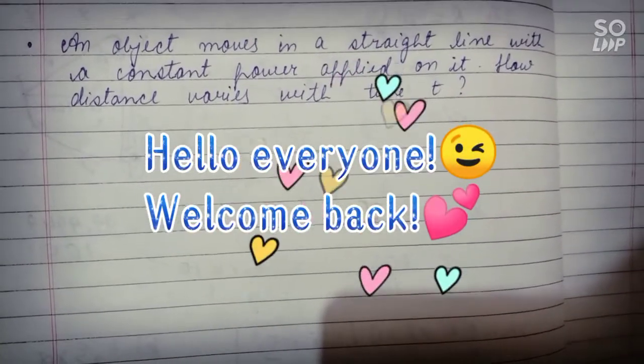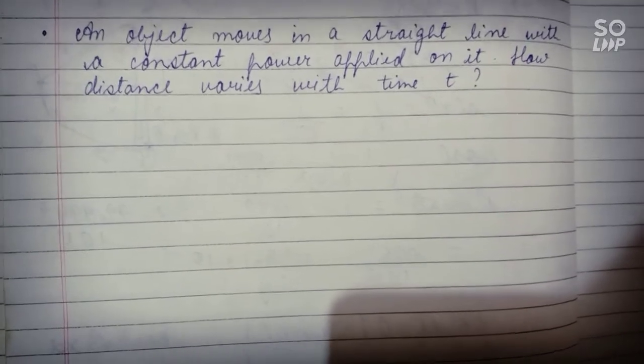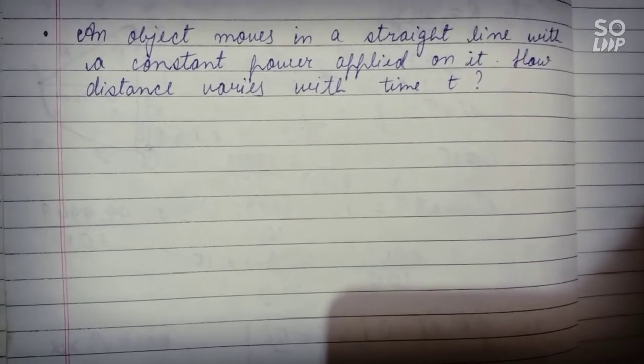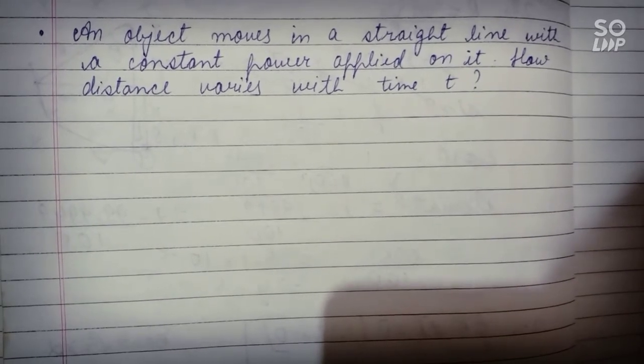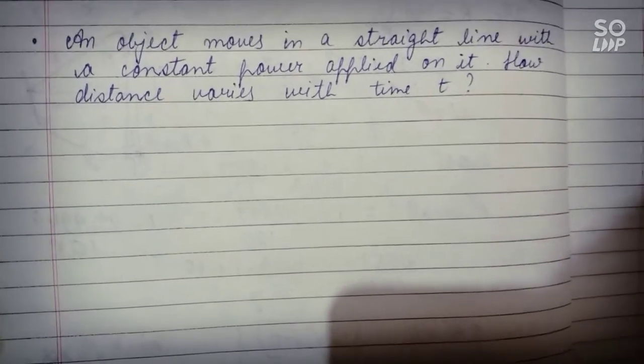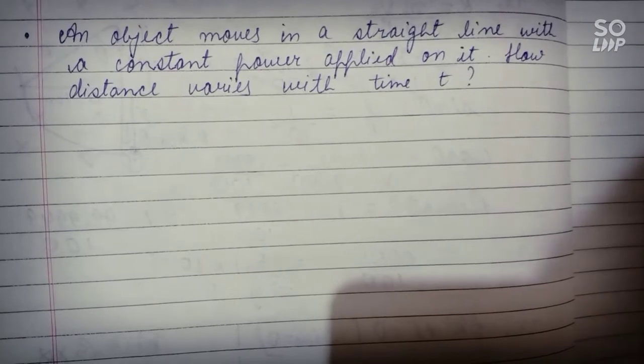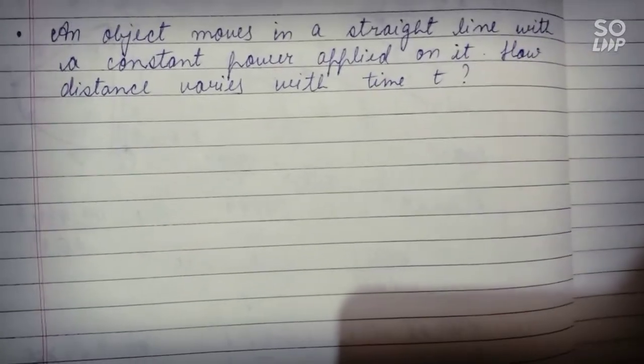Hey everyone, hope you all are fit and safe. Here we are going to discuss this question that has been asked in shift 2 of yesterday's JEE Main. So this is a question from the physics section. An object moves in a straight line with a constant power applied on it.